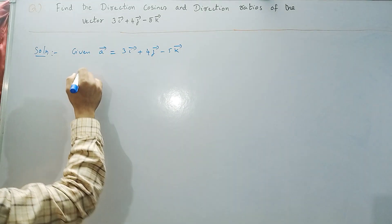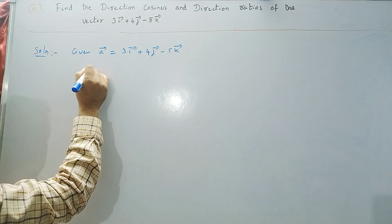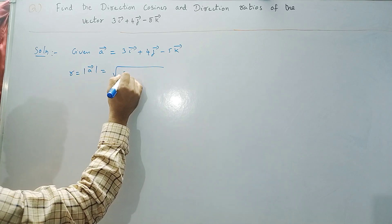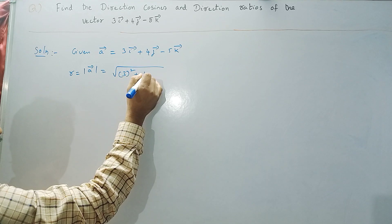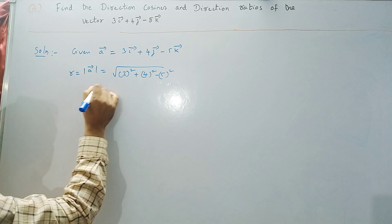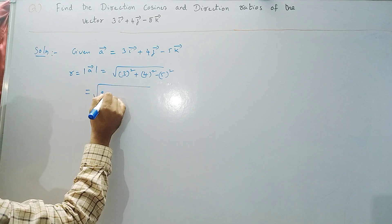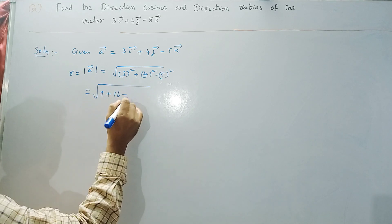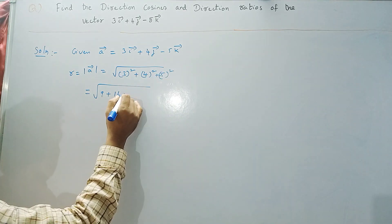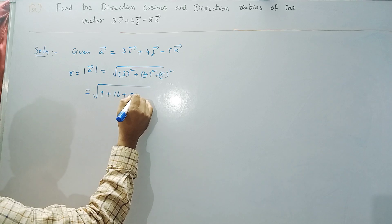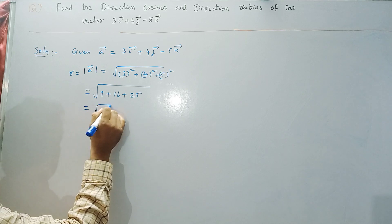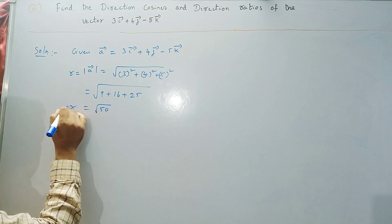Then we will find the modulus of this vector. Modulus of a bar, which we call r, is equal to the square root of 3 squared plus 4 squared plus (minus 5) squared. That gives us square root of 9 plus 16 plus 25, which equals square root of 50. So r equals root 50.